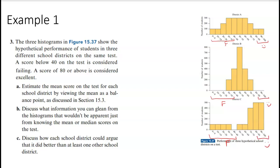Estimate the mean score on the test for each school district by viewing the mean as a balance point. If we think back to a balance point, think of it as like that seesaw. Where would we want to put that seesaw? We'd probably want to put the seesaw for A right about there. So we might give that a score, a mean score of 50.